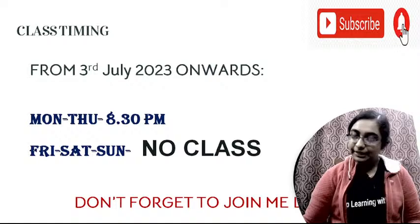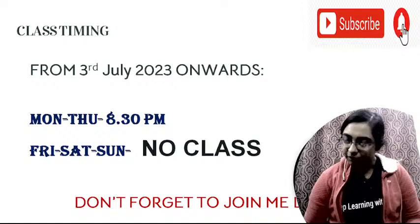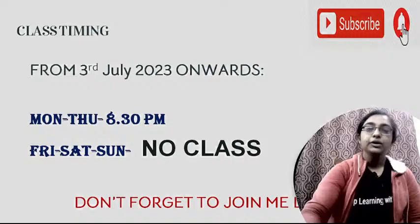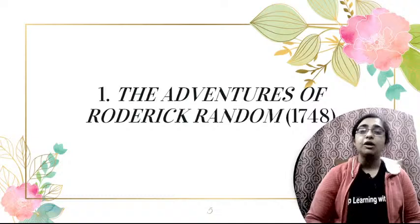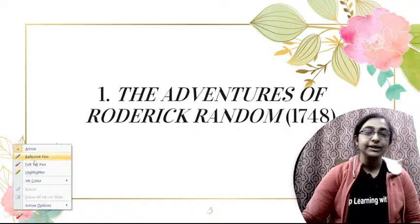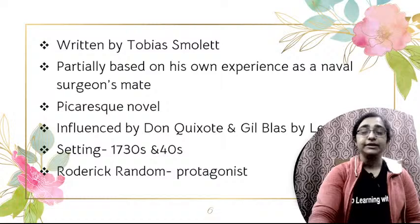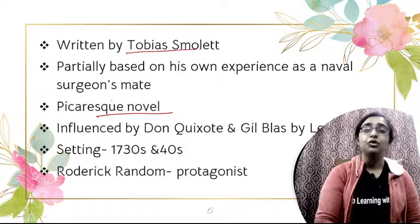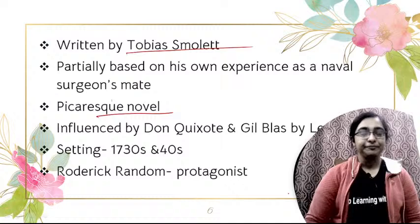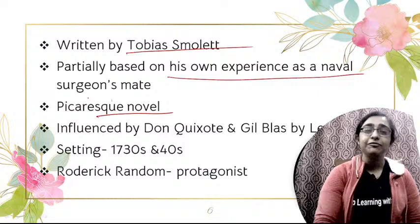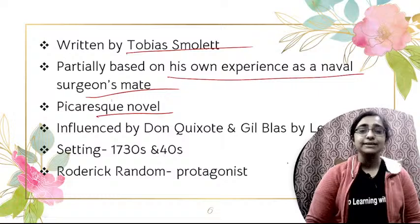Today we will talk about important debut novels. The first important novel we are going to discuss is The Adventures of Roderick Random, published in 1748. It is a kind of picaresque novel written by Tobias Smollett, an 18th century British novelist. It is partially based on his own experience as a naval surgeon's mate, and his own travel journey and experience is mentioned here.